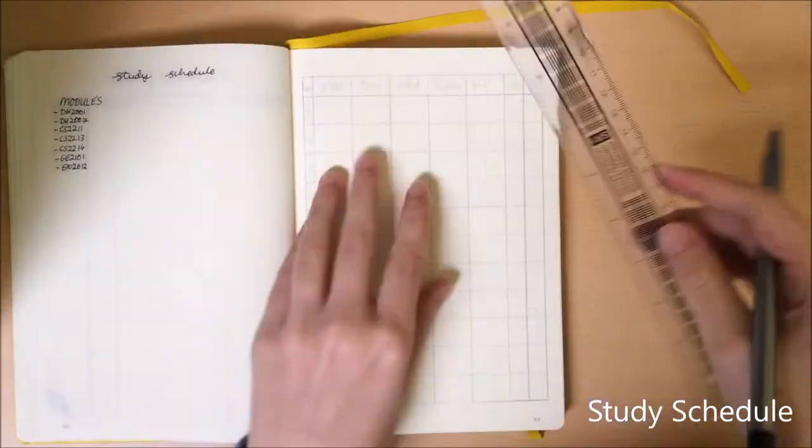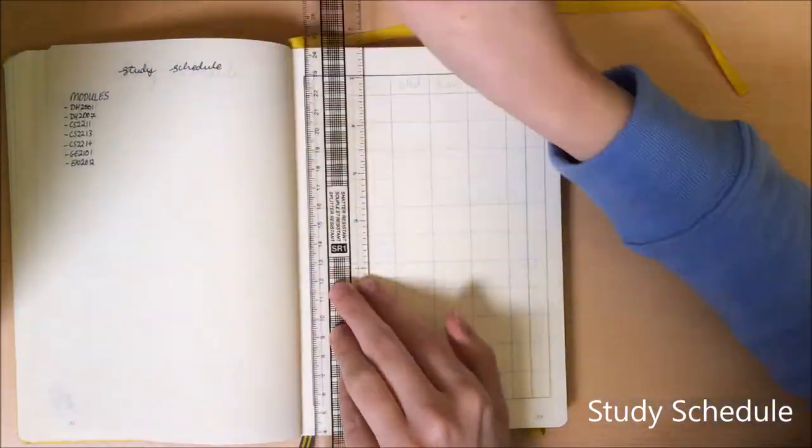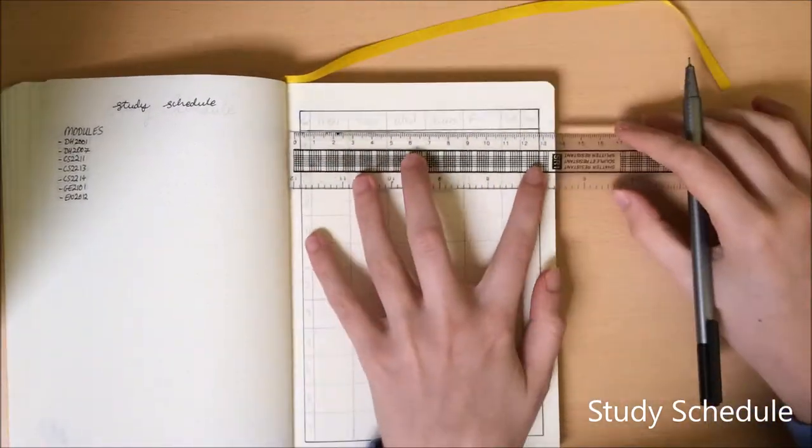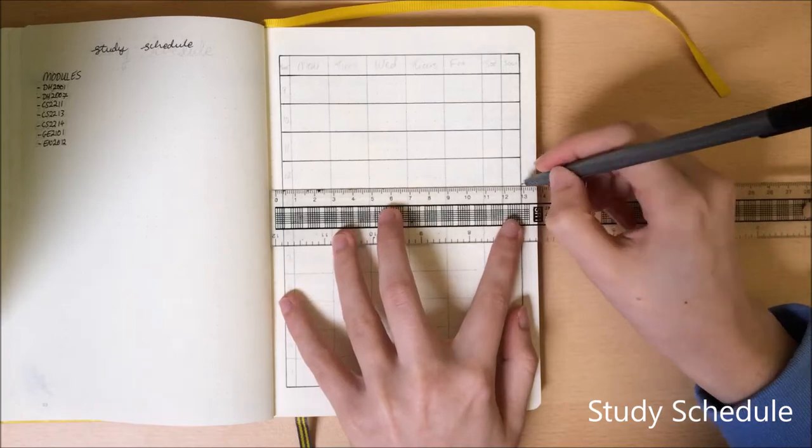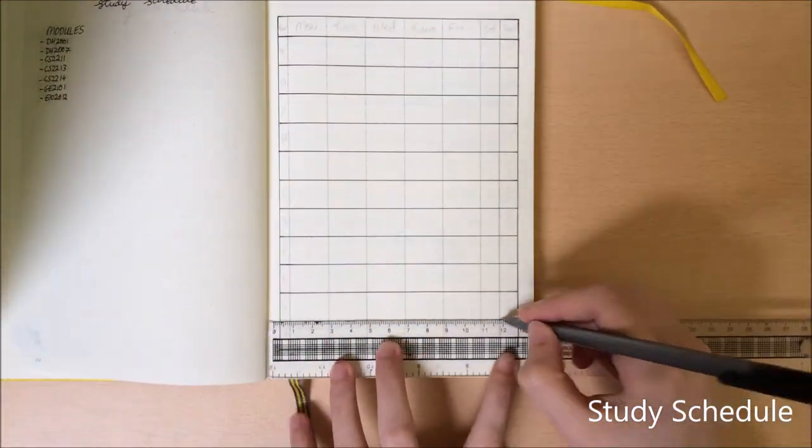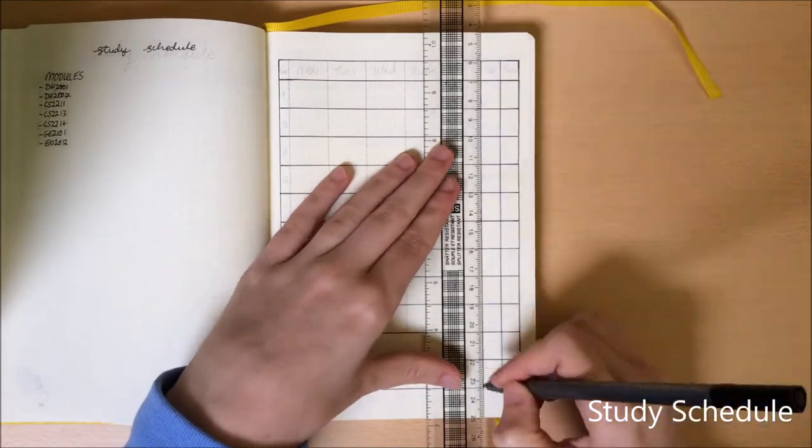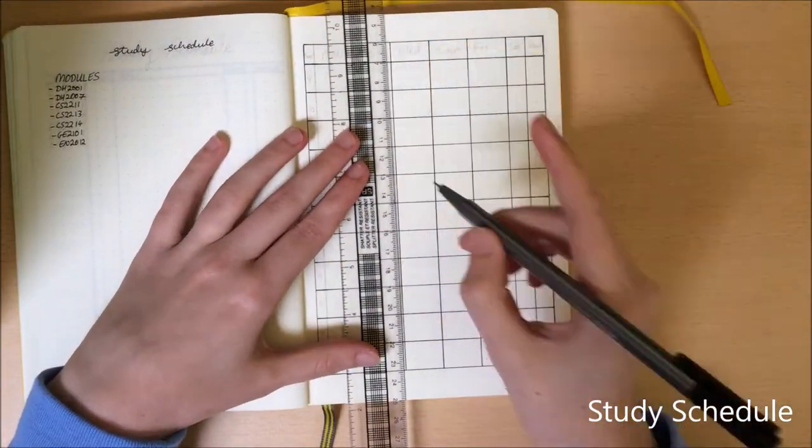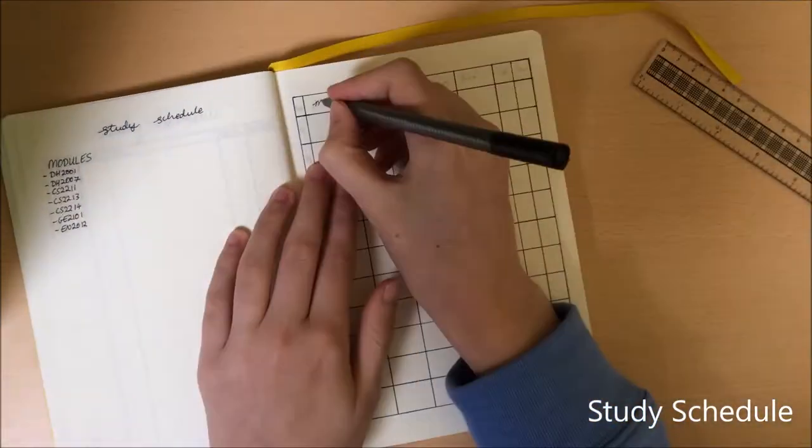Then it is on to my study schedule which I recommend everyone at least needs to do a rough draft of, because I find it very helpful just to see what classes I have, how many hours I need to study for them and when I actually can study. So this is a very rough timetable that I will fill in later and it will just show me my free hours and when I can schedule in time to study.